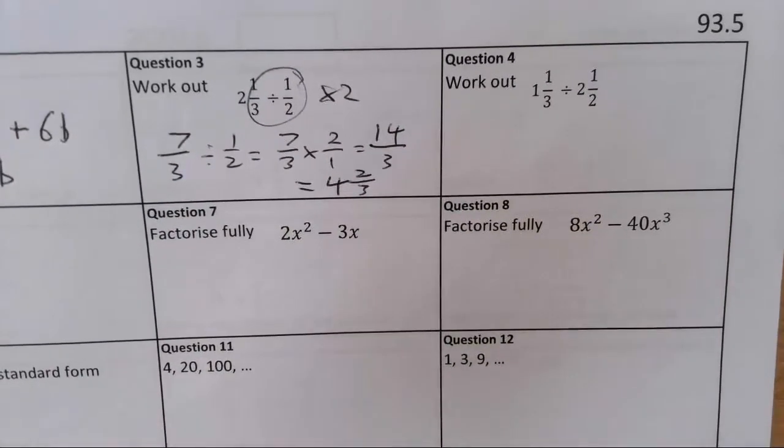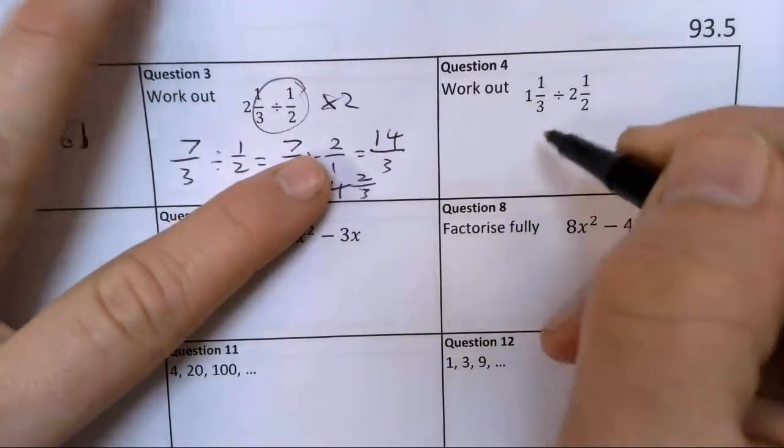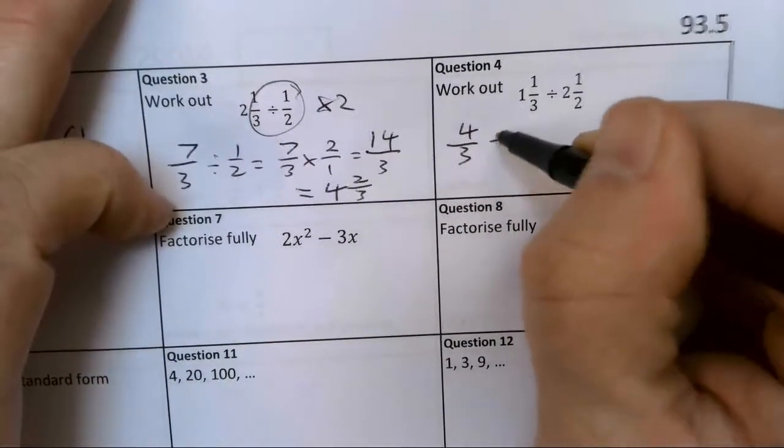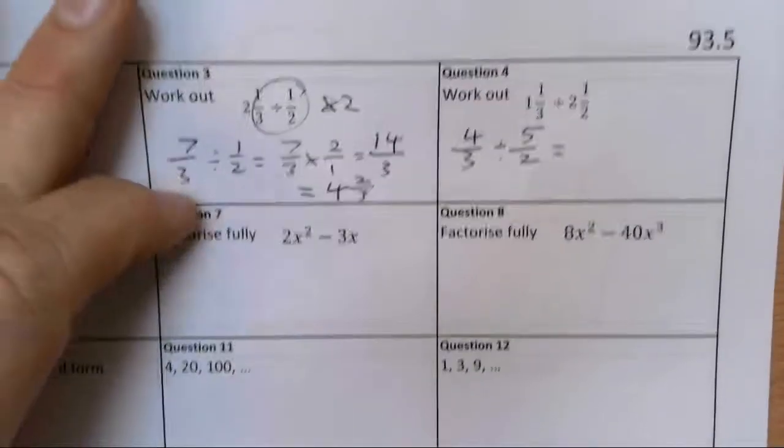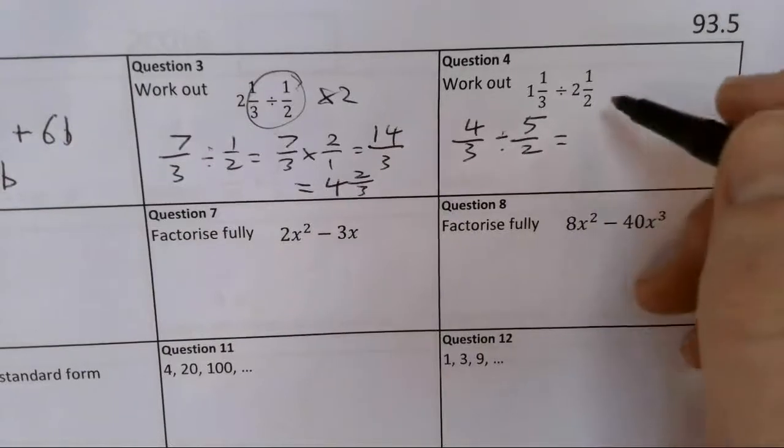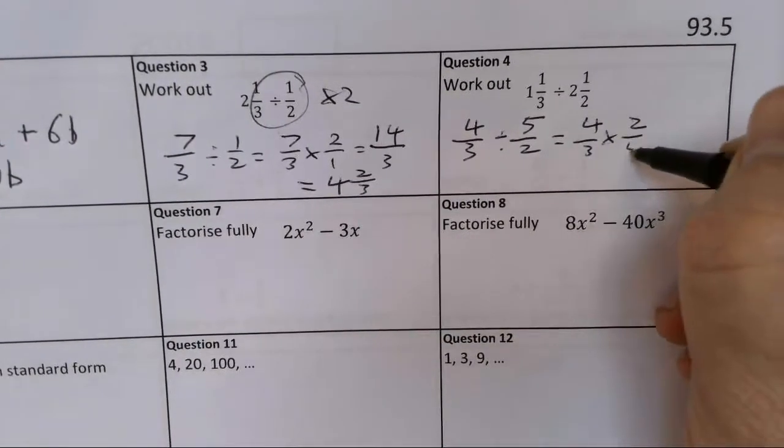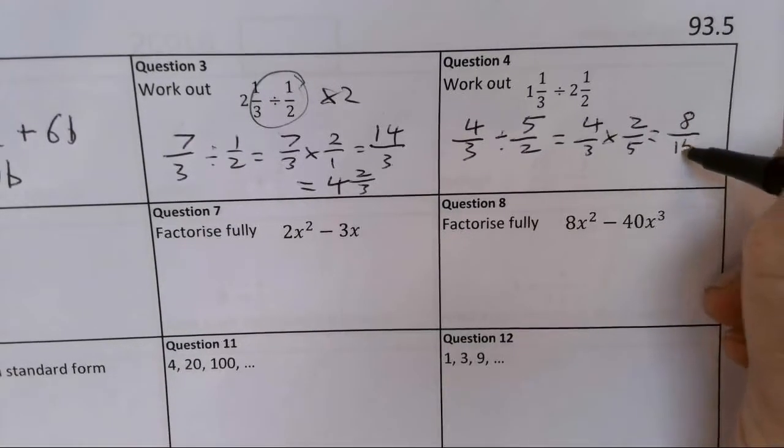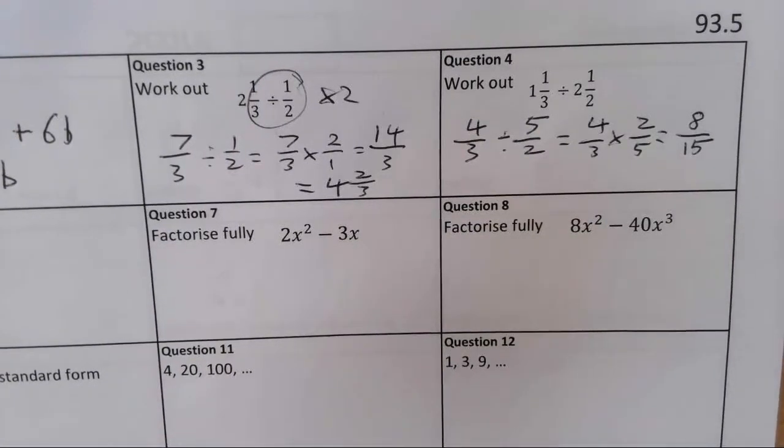Question four. This time I am going to use my improper fractions. So 1 and 1 third is the same as 4 thirds, divided by 2 and 1 half, that's the same as dividing it by 5 halves. And then I'm going to use my multiplicative inverse to do 4 thirds times by 2 fifths, which is going to give me 8 out of 15. Can I simplify that? No, there's nothing which I can do to simplify that, so it's going to stay as 8 fifths.